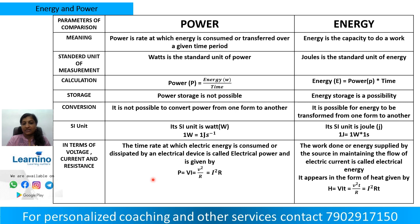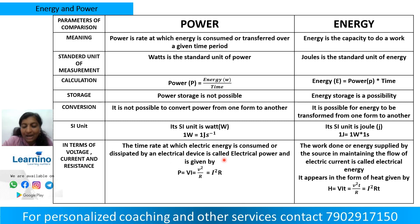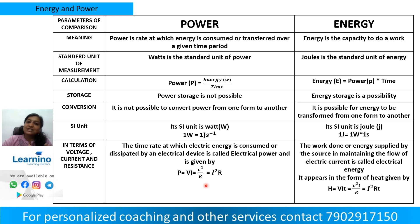In terms of electrical parameters: the rate at which electrical energy is consumed or dissipated by an electrical device is called electrical power. P is equal to V into I, or in terms of V squared by R, or I squared into R.